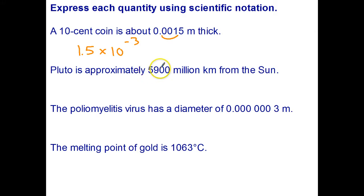Okay, with the second one we got to be a little bit careful here. Pluto is approximately 5,900 million kilometers from the Sun. So first I'm going to write that as a normal number, 5900, and then I've got to add six more zeros for the million.